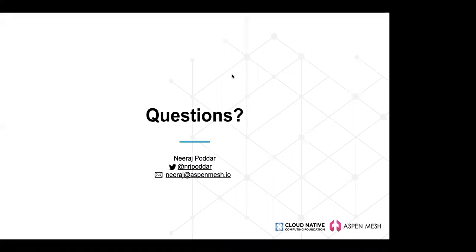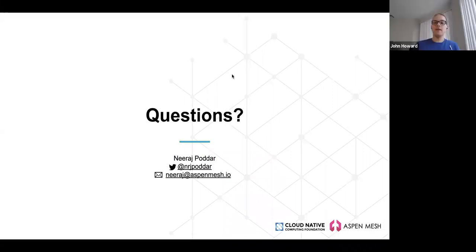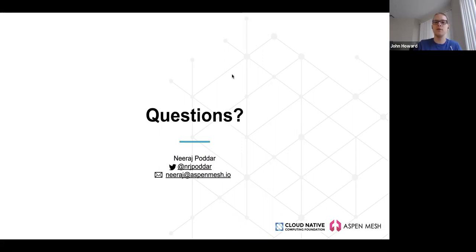Q: Is there a simple way to configure access logging for errors only — for example log 4xx and 5xx but not 200s? A: There's no simple built-in way, but it is possible through EnvoyFilter. The team is working on a more native telemetry and access logging API that will support this. A sample will be added to the GitHub repository shared during the presentation.